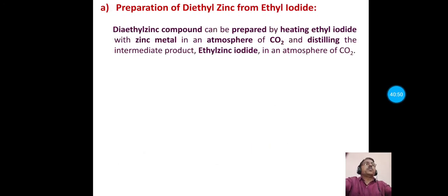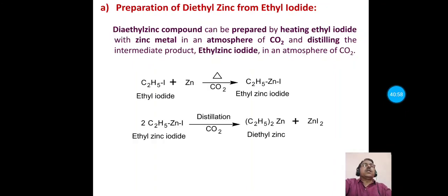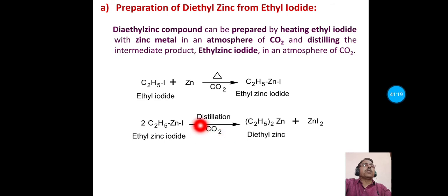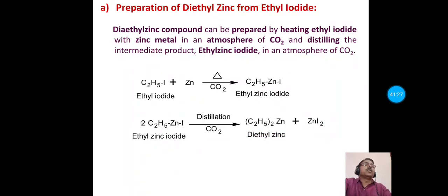A specific example is the preparation of diethyl zinc from ethyl iodide. Ethyl iodide is treated with zinc in a CO₂ atmosphere to give ethyl zinc iodide, which on distillation under CO₂ gives diethyl zinc (C₂H₅)₂Zn and zinc iodide as a byproduct.